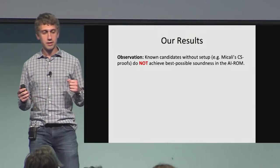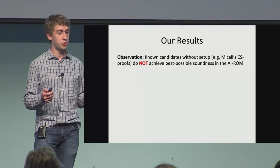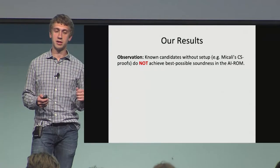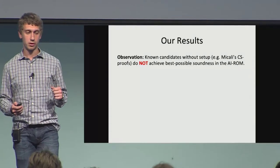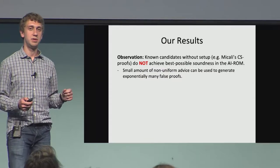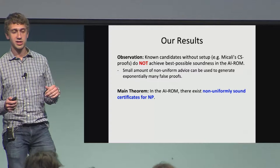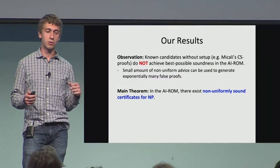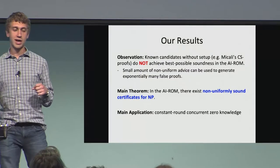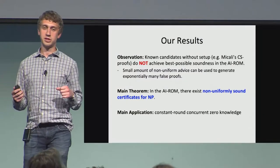What do we achieve in this work? First, we observe that known candidates of SNARGs without setup — for example, Micali's CS proofs — do not achieve best-possible soundness in the auxiliary input random oracle model, where advice is allowed to depend on the random oracle. Specifically, we show that with just a small amount of non-uniform advice, one can generate an exponentially large number of false proofs. However, we show that in the auxiliary input random oracle model, non-uniformly sound certificates for NP do actually exist. And as our main application, we show how to construct constant-round concurrent zero knowledge from these primitives.